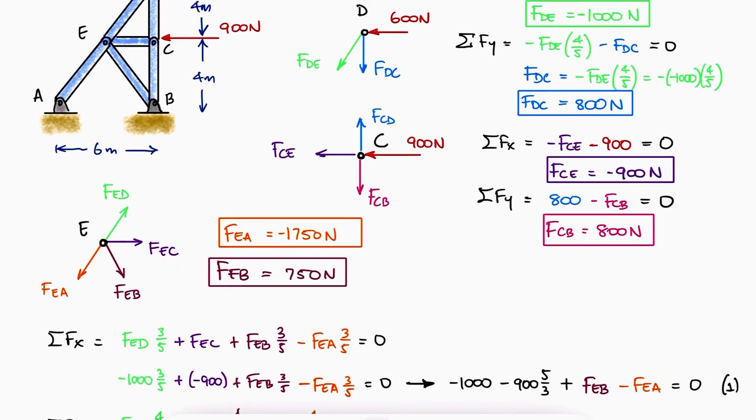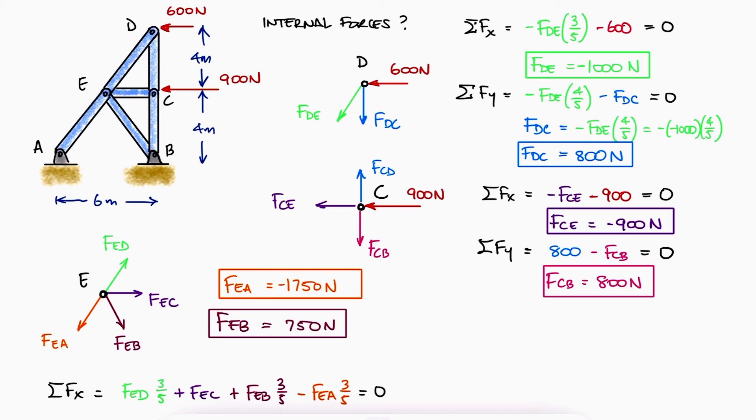With the values for all internal forces, we see the members that are in compression and the members that are in tension, which kind of makes sense when looking at the external loads of 600 and 900 newtons. Notice, once again, that in this problem, we didn't need to solve for the reaction forces at A and B.